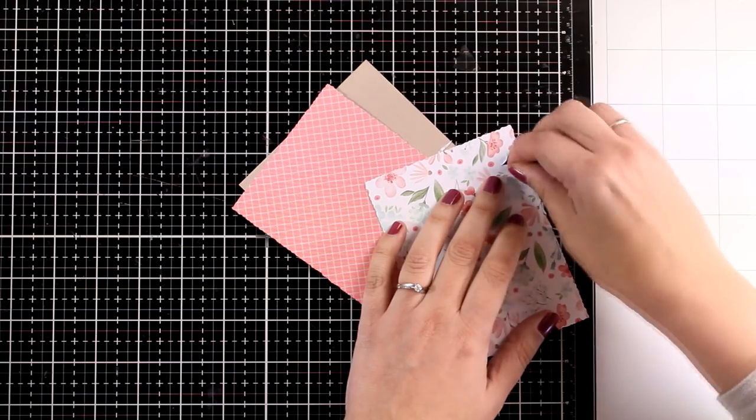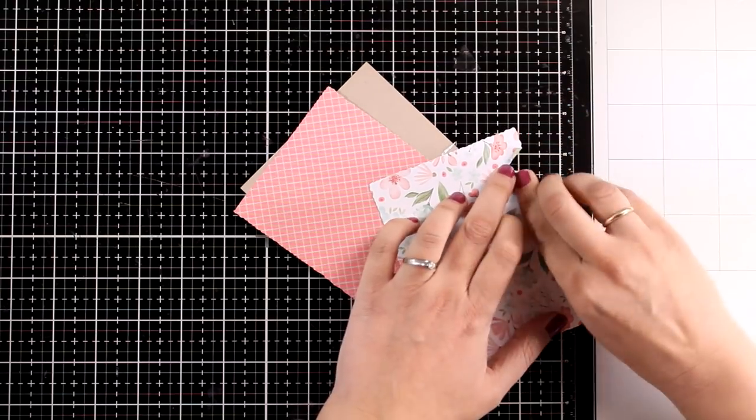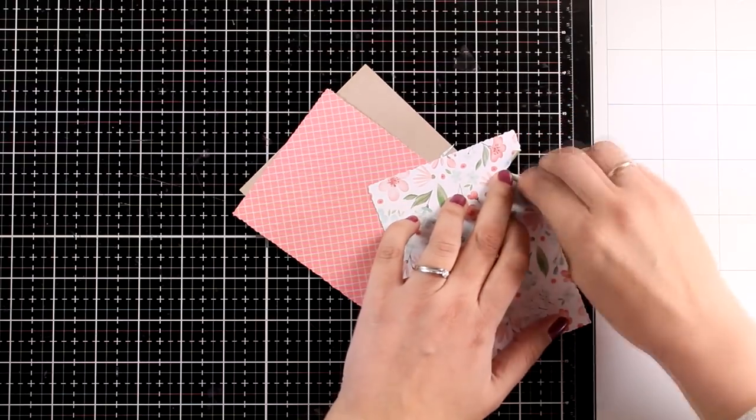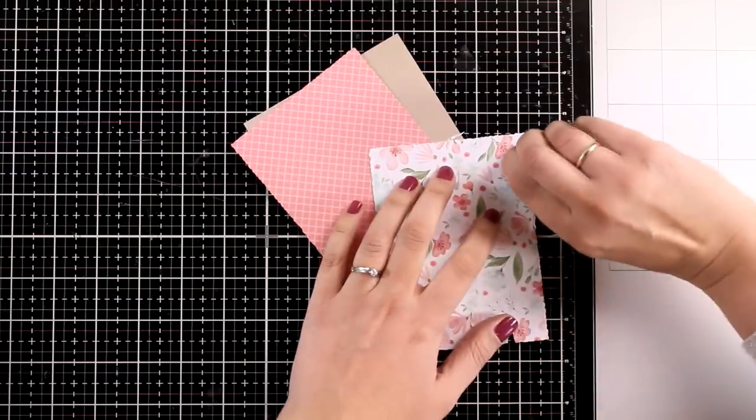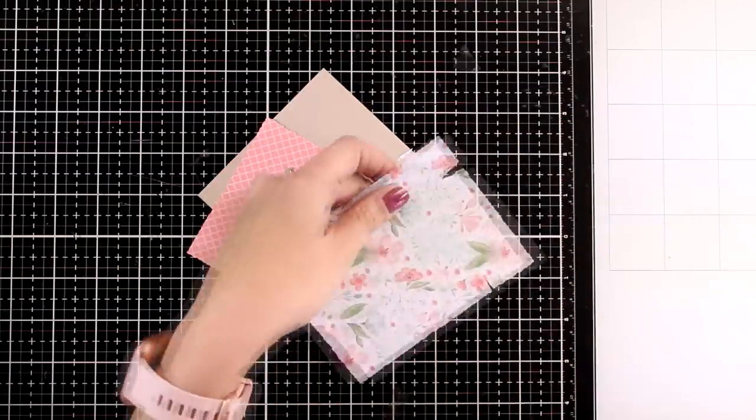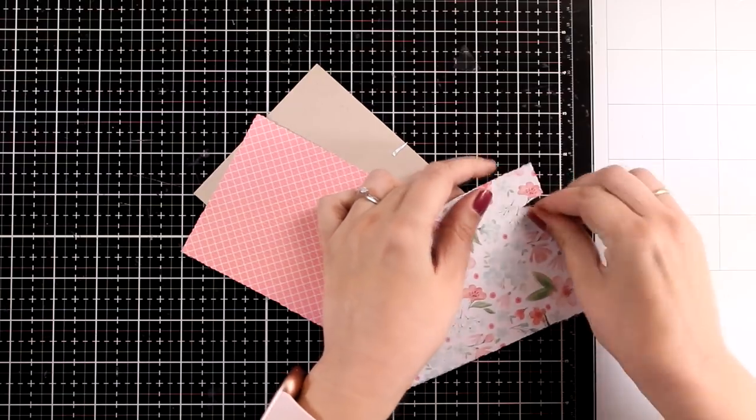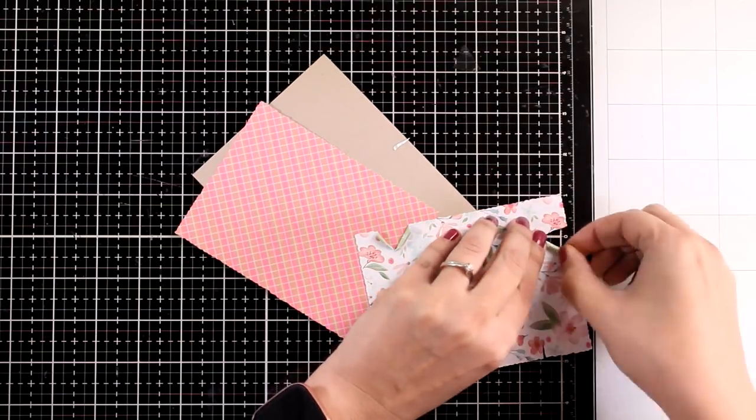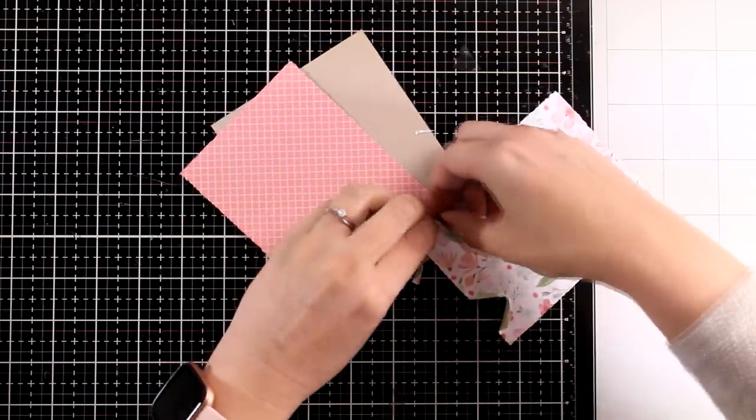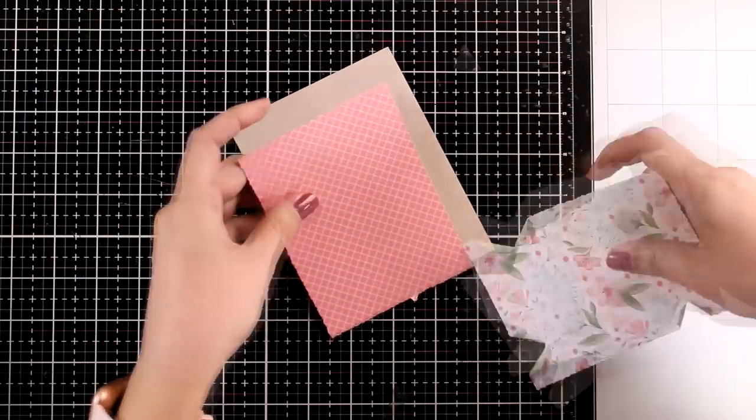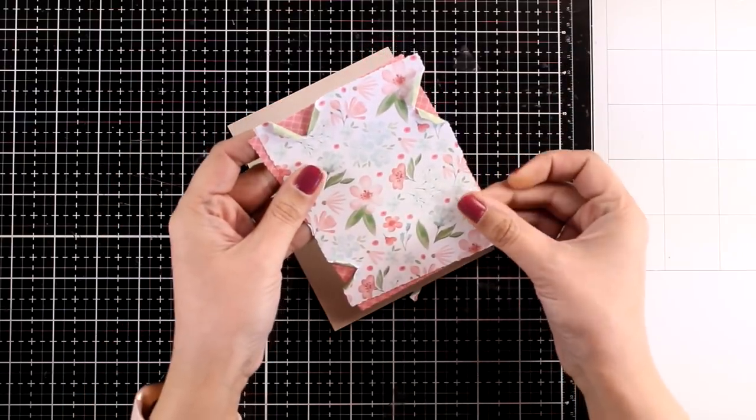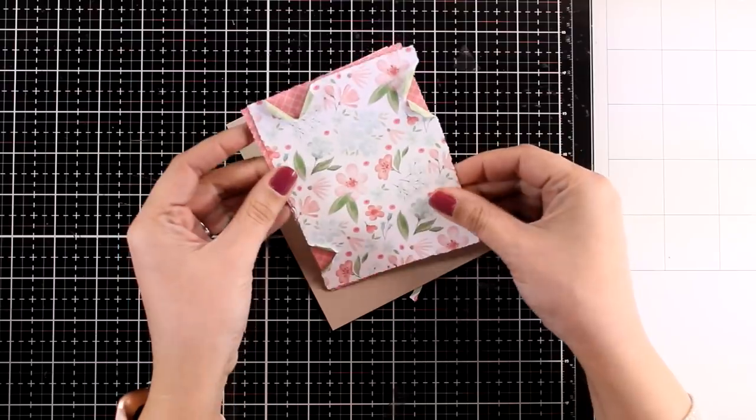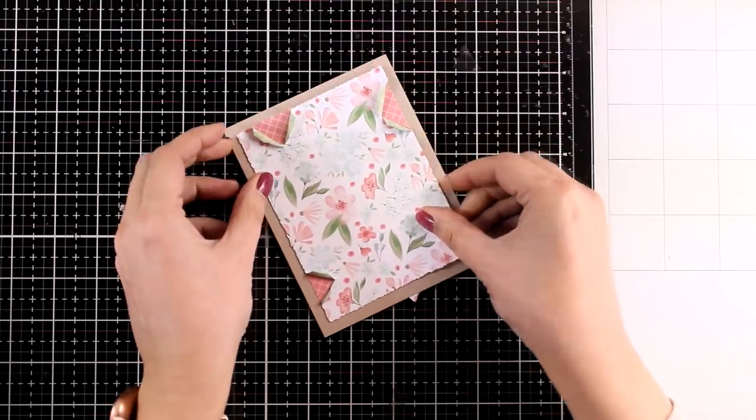This design works with any paper pad you have at home. With a paper pad, all the different papers match together with similar colors, so it's easy to layer them. However, I made sure that one panel has a busy pattern with the flowers, while the other one is pretty much solid. When I layer one on top of the other, you can see the pink coming through.